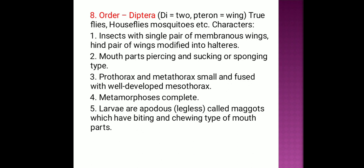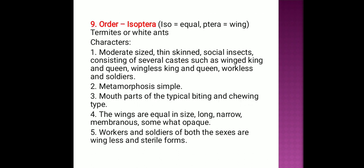Isoptera: 'Iso' means equal, 'ptera' means wings. Termites and white ants are examples. More than 2,000 species present worldwide. Character features: moderate size, rather soft-bodied insects living in large colonies composed of a few reproductive forms and large numbers of fingerless sterile workers and soldiers. Metamorphosis simple; mouthparts of the biting and chewing type. Wings equal in size, long, narrow, and membranous.